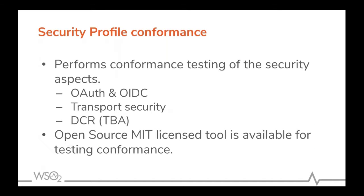Security profile conformance is one of the most important parts of any PSD2 interface, since you are working with live banking data. This conformance suite addresses the SCA portions and the RTS in the PSD2 context. Specifically, it looks at OAuth2 and OIDC flows, transport security, and DCR coming in the future — currently it only covers the auth and OIDC flows. Notably, this tool is open source under the MIT license, so anyone can download it and run their own implementation. OBIE has made most of the documentation public, so anyone can test out an implementation.